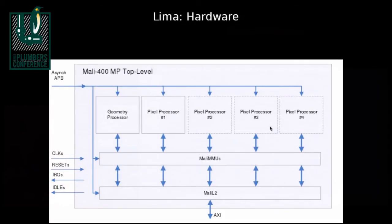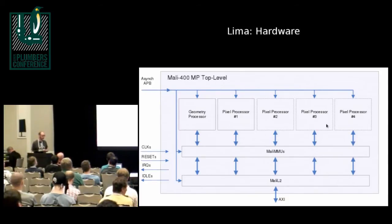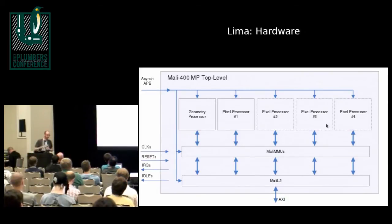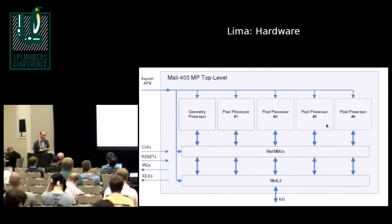On the Mali 400, one thing that's a little different is the CPU actually kicks off the geometry processing and the pixel processing independently. This lets you do some neat things — say you're still waiting for a V-blank for a render target buffer to become available, you can still kick off the vertex processing. On most other GPUs, the hardware handles the transition from vertex to fragment, so you have to wait until V-blank has happened before starting vertex processing.